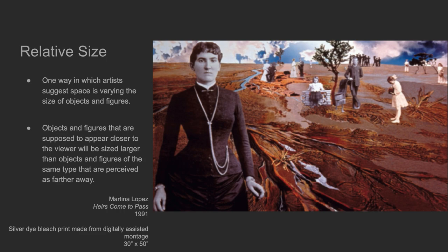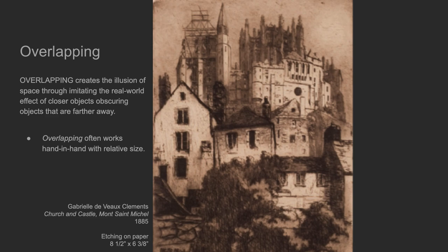That is true with other objects in a landscape or in any sort of artwork. Another thing we innately understand is overlapping. Overlapping creates the illusion of space through imitating the real-world effect of closer objects obscuring objects that are farther away. Overlapping often works hand-in-hand with relative size.